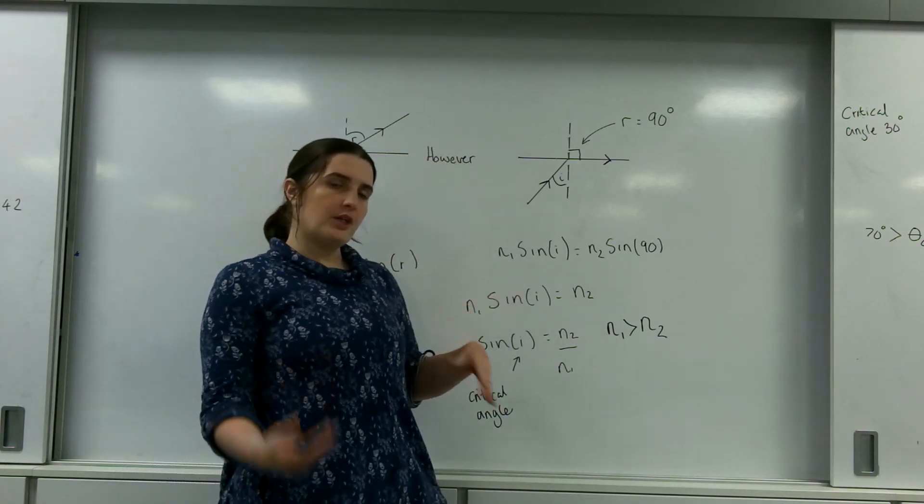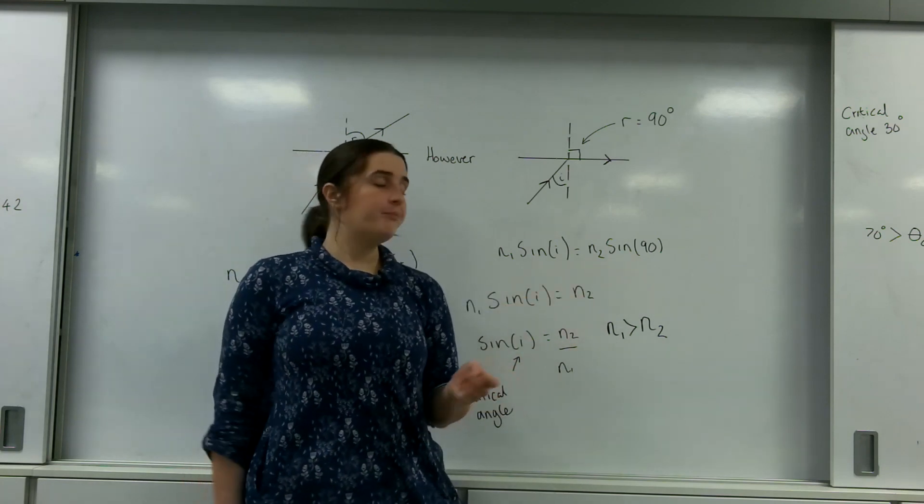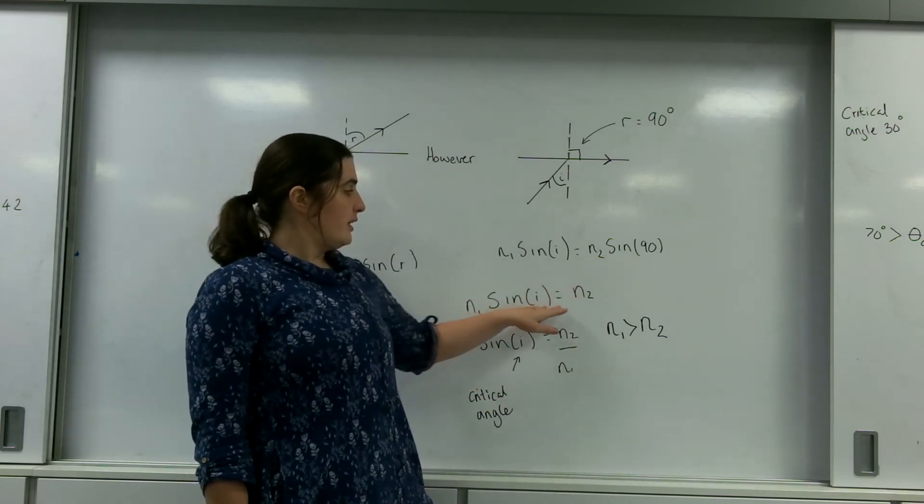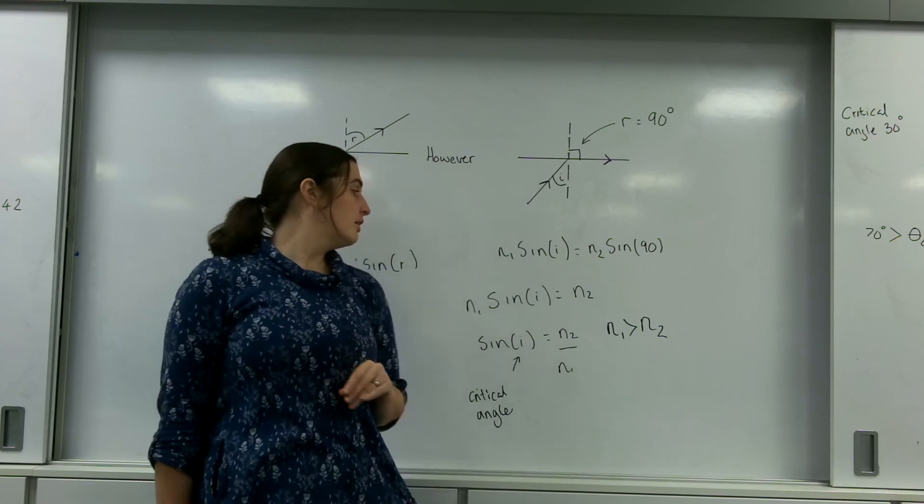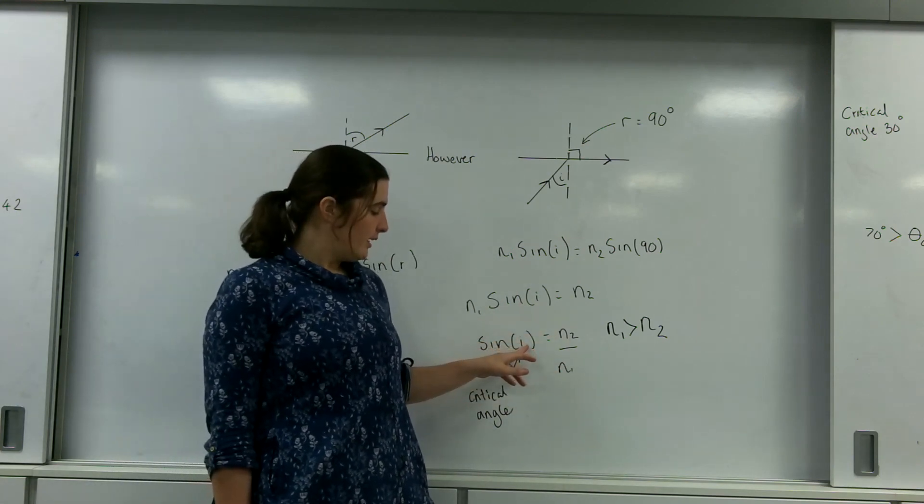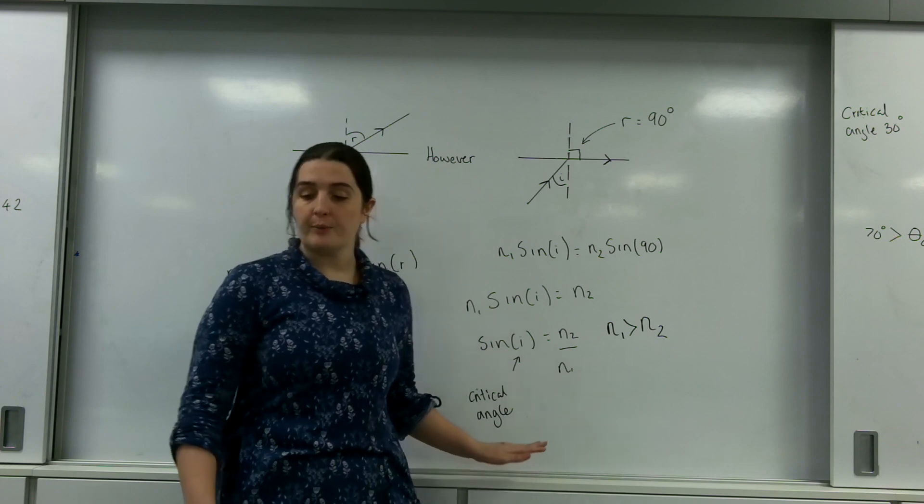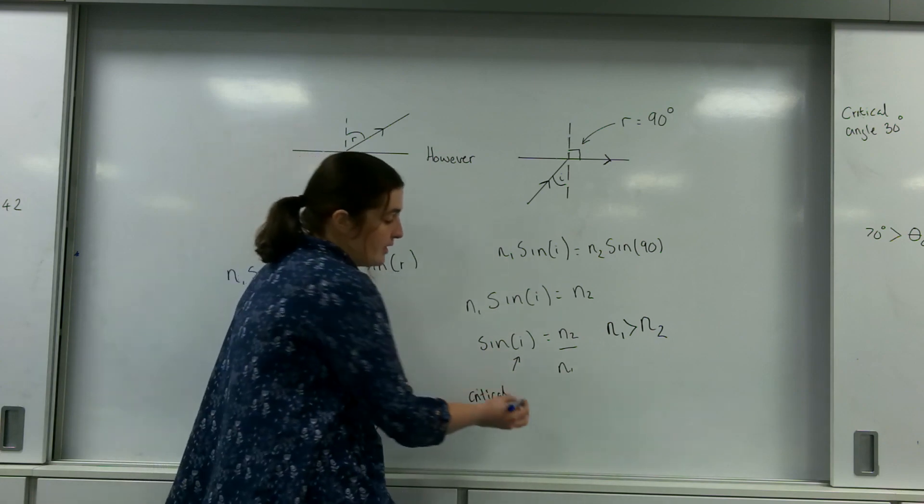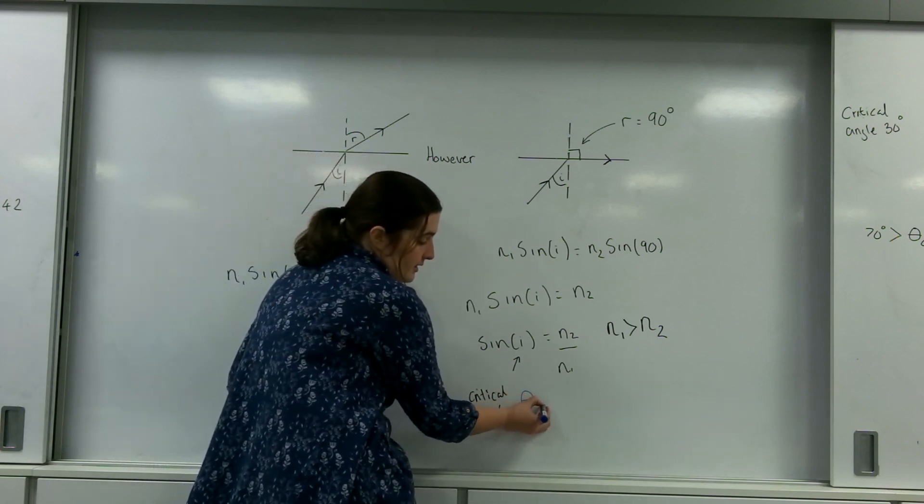And so, sine 90 of course is 1. N1 sine I equals N2. Sine I equals N2 over N1, and this I is known as the critical angle. You sometimes see it written as theta C.